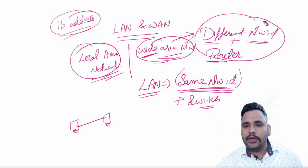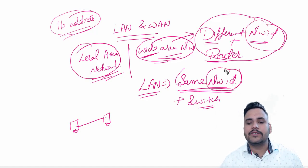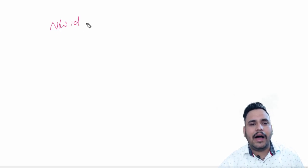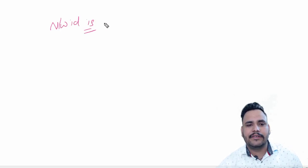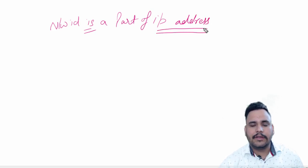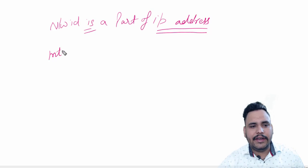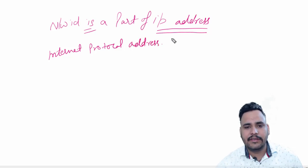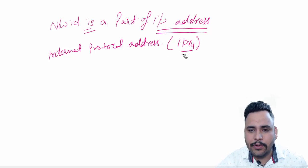First of all, we need to know about what is a network ID, because with the help of network ID we can make LAN and WAN. Network ID is a part of IP address. So our today's topic is IP address. IP address is Internet Protocol address. We have two types of IP addresses: IPv4 and IPv6. But today I am going to discuss about IPv4; after that we will discuss about IPv6.